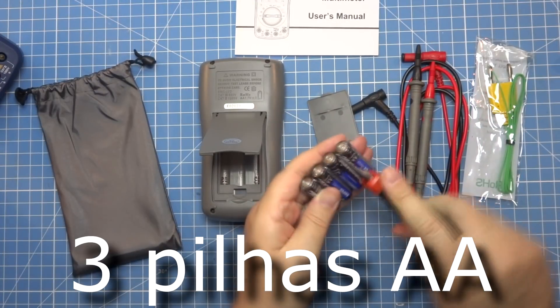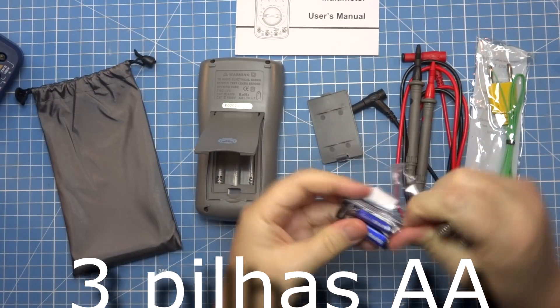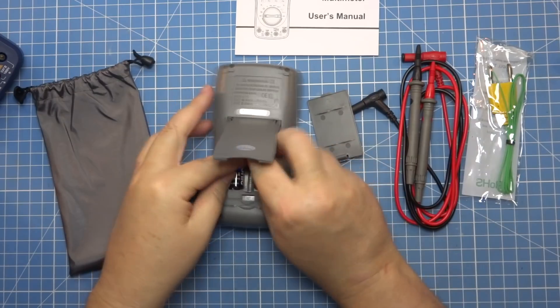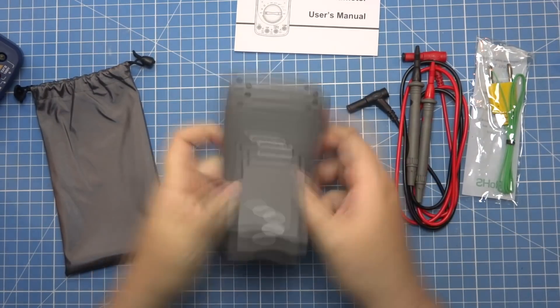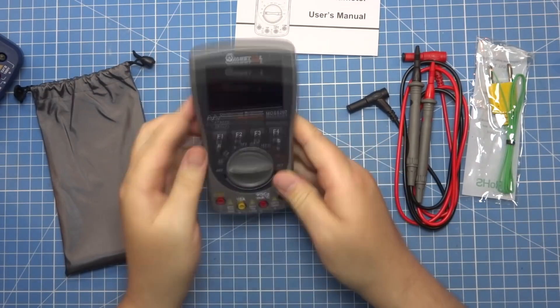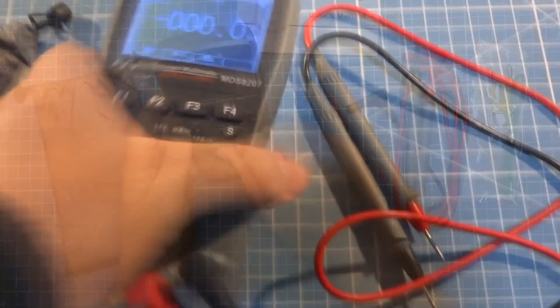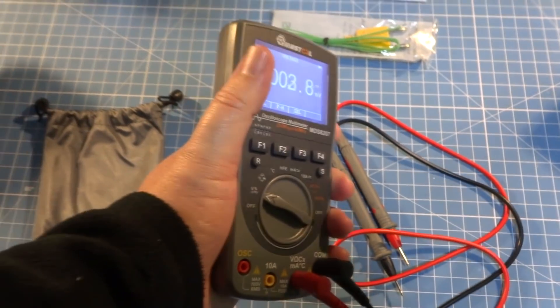A utilização de pilhas AAA facilita a aquisição e preço. O multímetro, surpreendentemente, não consome tanta bateria como outras versões de multímetro com tela invertida. E por isso, usa apenas 3 pilhas contra as 4 das versões anteriores. Sem as pilhas, o multímetro pesa apenas 200 gramas, um pouco mais que um celular.